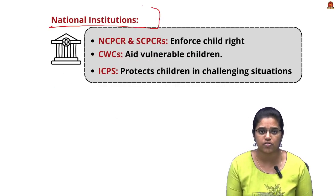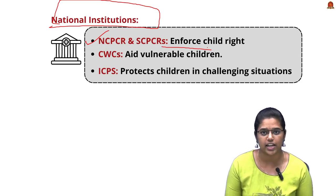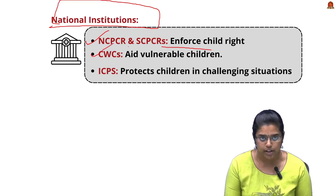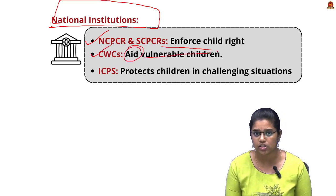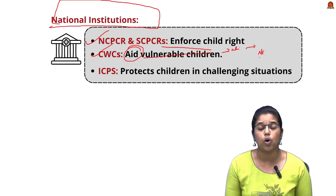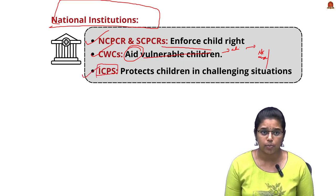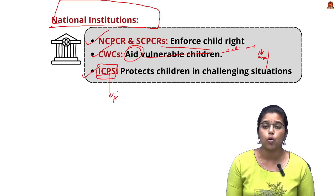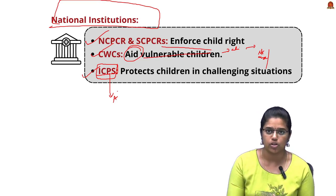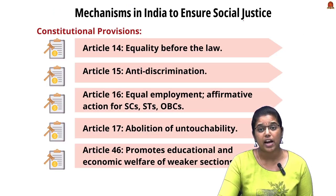National institutions to protect child rights include: the National Commission for Protection of Child Rights and State Commissions for Protection of Child Rights, which enforce child rights in India; the Child Welfare Committee, which protects vulnerable children — particularly those on streets or subjected to abuse; and the Integrated Child Protection Scheme, which aims to protect children in challenging situations such as living on streets or subjected to abuse in home or public spaces.